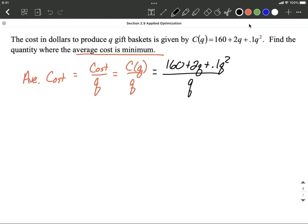I'm going to refer to this from here on out as AC for average cost of Q. The next thing I'm going to do is we want to find a minimum, so we want to find critical values or critical numbers. To do so, we'd like to take the derivative of this average cost function.